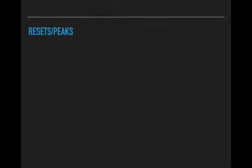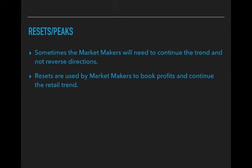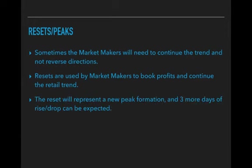Now let's talk about resets and peaks. Sometimes market makers need to continue the trend rather than reverse directions, and they do that by using resets. Resets are used by market makers to book profits and continue the trend. They can't just keep going in one direction forever — at some point they have to book profits and reverse briefly before continuing the trend. They do that with a reset, and the reset will represent a new peak formation.